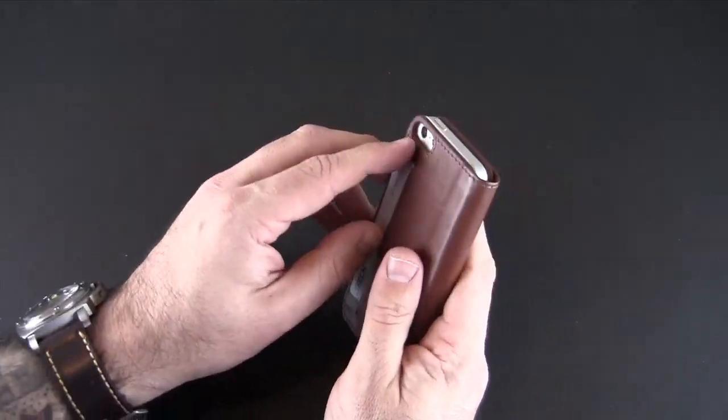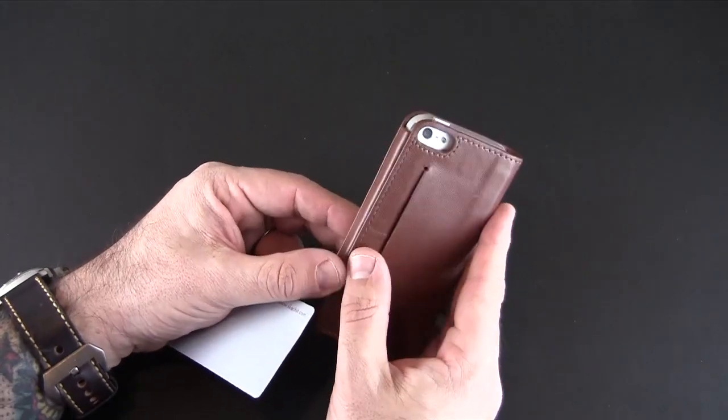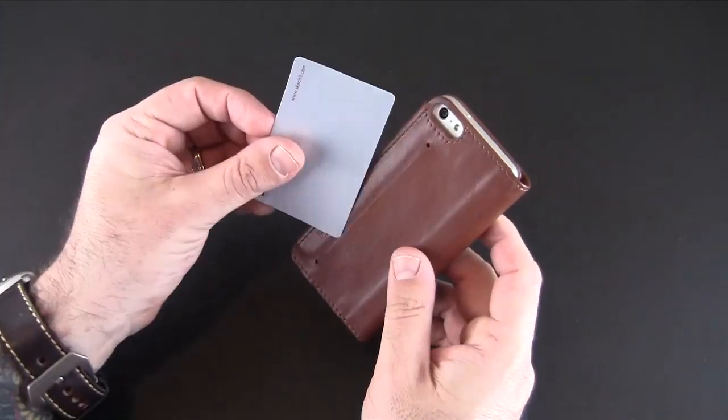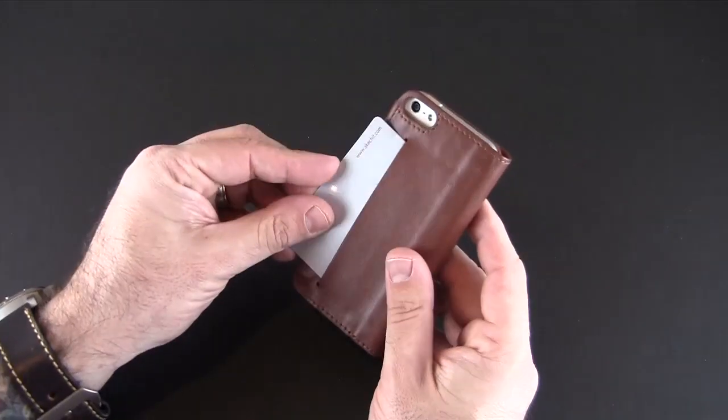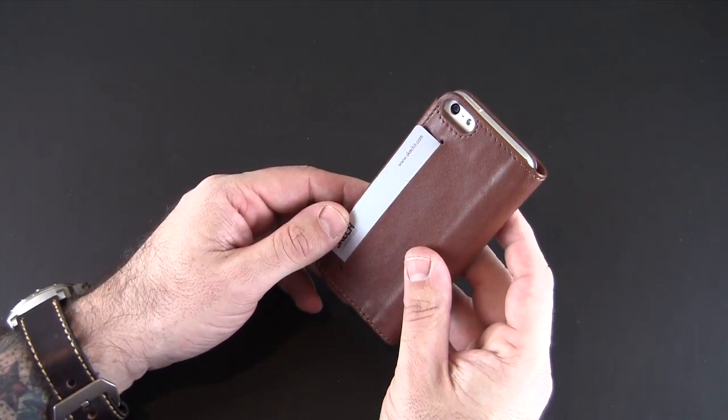On the back there is a cutout for cards as you can see. This is a minimalistic style wallet case. You can only fit about two cards in here and it's very sleek. You have the Sketch logo embossed right there and then a pill shaped cutout for the camera, secondary mic and flash.